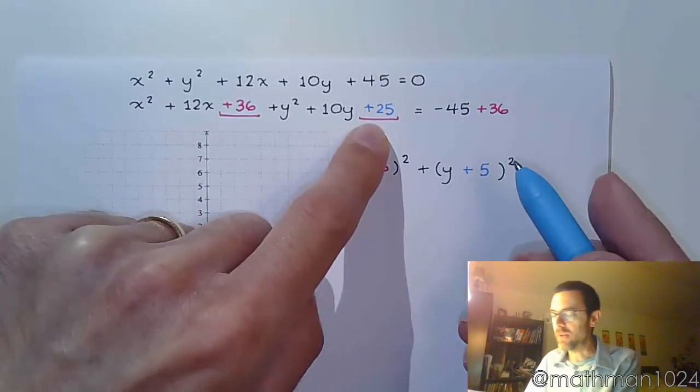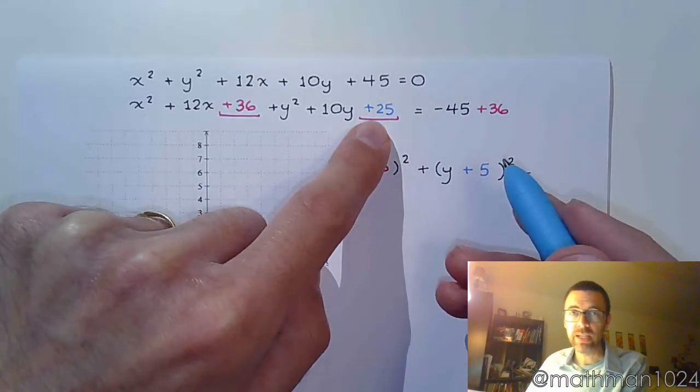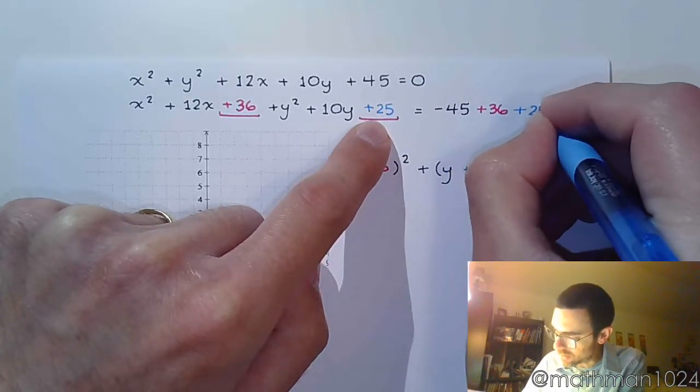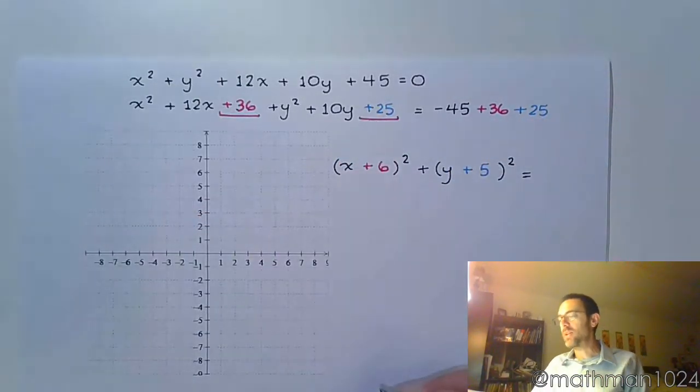Same thing for the 25. I can't just add 25 on the left. It creates imbalance unless I also add 25 to the right side like that.